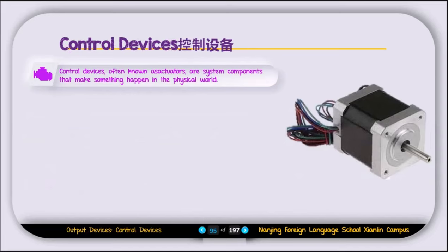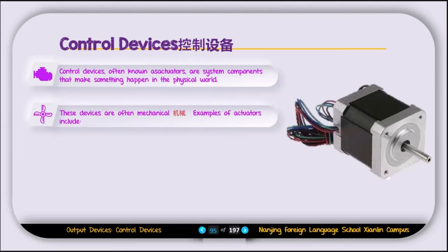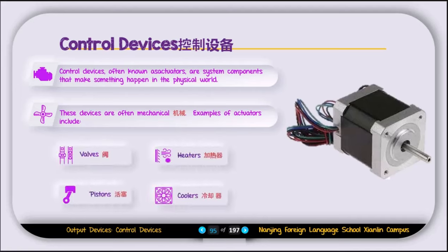The next type of output device is the control device, often known as actuators. These are system components that make something happen in the physical world. These devices are often mechanical. Examples of actuators include valves, heaters, pistons, coolers, and motors.